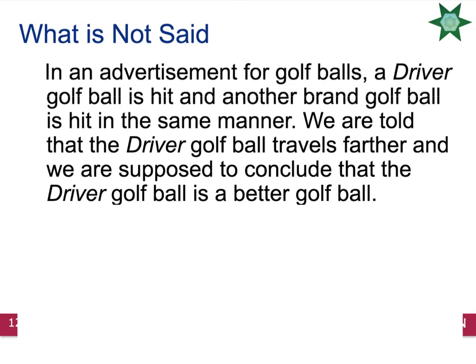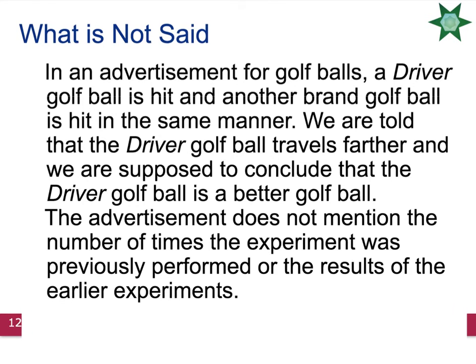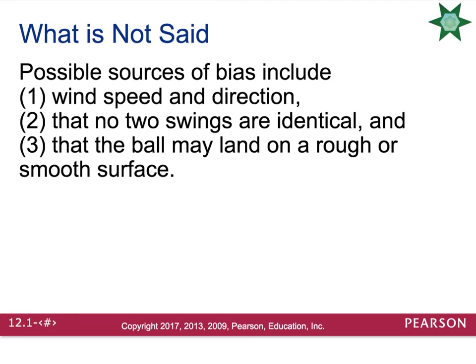In an advertisement for golf balls, a driver golf ball is hit and another brand of golf ball is hit in the same manner. We're told that the driver golf ball travels farther and are supposed to conclude it is a better golf ball. The advertisement does not mention the number of times the experiment was previously performed or the results of earlier experiences. Possible sources of bias could include wind speed and direction, that no two swings are the same, and that the ball may land on a rough or smooth surface.